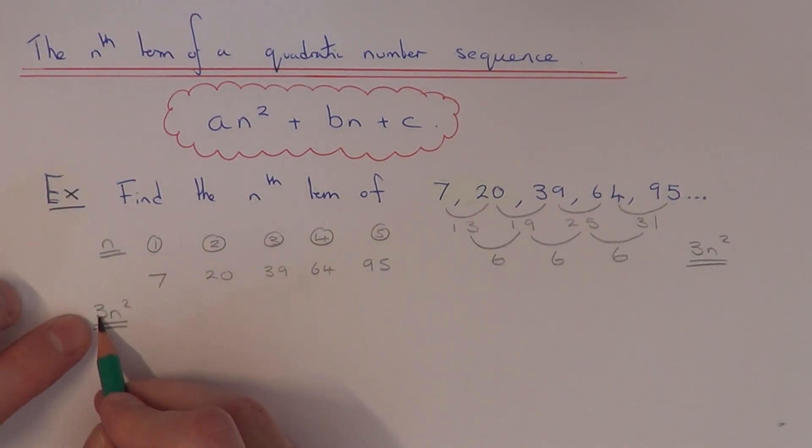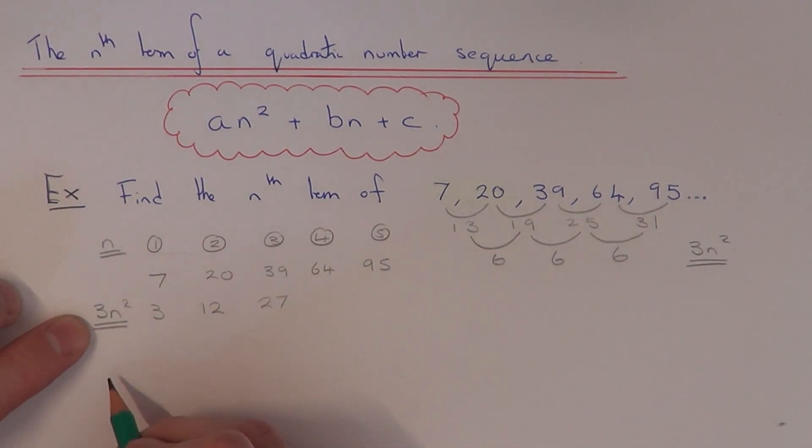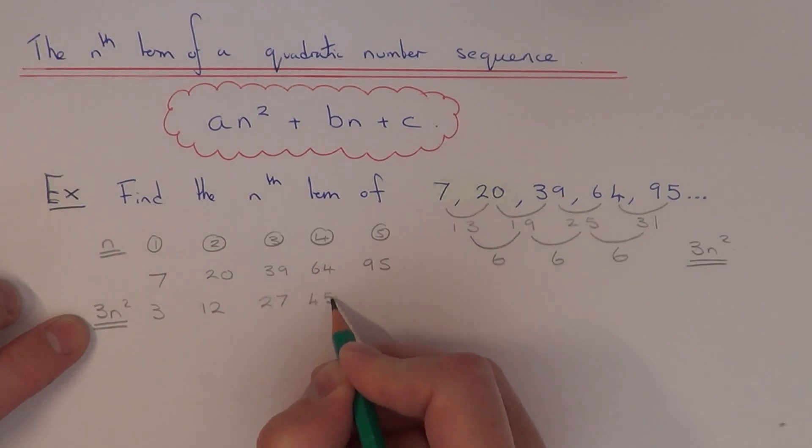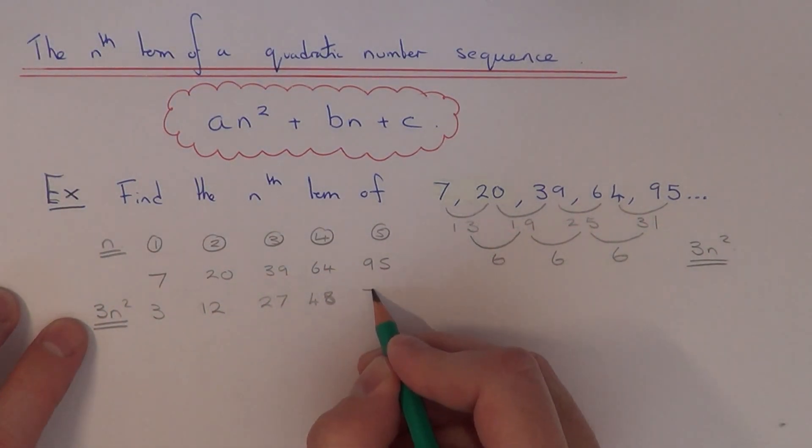So if we sub in 1 we get 3 times 1 squared, that is 3. If we sub in 3 we get 3 times 3 squared, which is 27. If we sub in 4 we get 3 times 4 squared, which is 48. And if we sub in 5 we get 3 times 5 squared, which is 75.